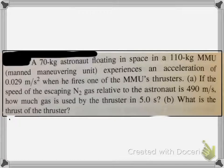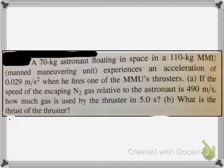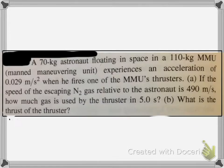Here is that 70 kilogram astronaut, just like in this picture right here floating in space. Floating in space, and the 110 kilogram MMU, there's that manned maneuvering unit, experiences an acceleration of 0.029 meters per second squared. So, that box on the back is firing a thruster and it's causing the astronaut to accelerate at that rate.